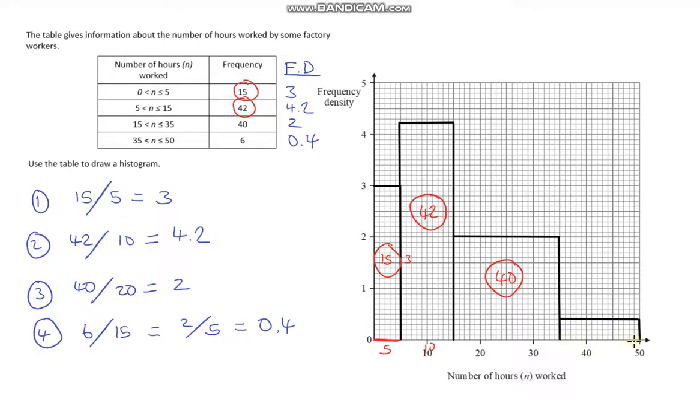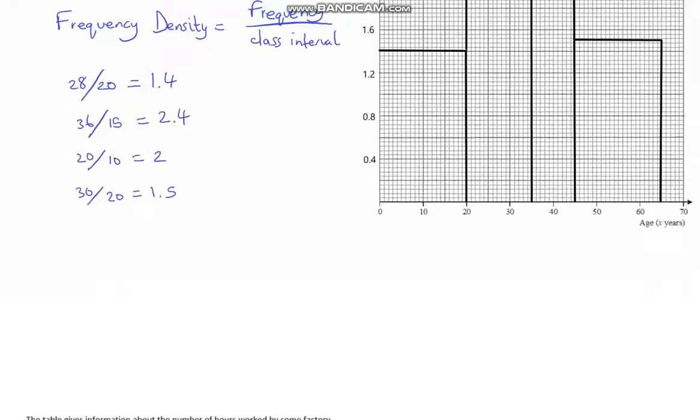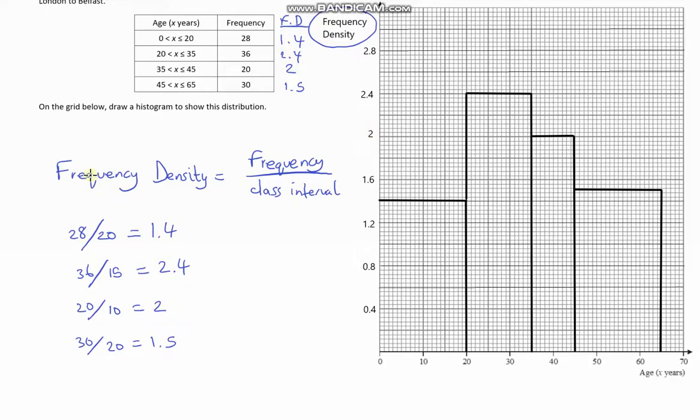The last one, that's 15 along and 0.4 up. 15 times 0.4 gives us 6. Whenever we construct a histogram, the area of each of the bars is exactly the same as the frequency. The reason why that is, if we go back to our formula for frequency density, if we've been given the frequency density and the class interval, in order to calculate the frequency, we just do frequency density multiplied by class interval. And that is just base times height.